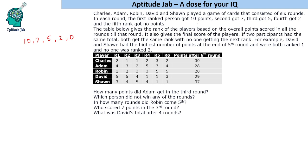For example, if we see the third round, after that round Charles was first, Adam was second, Robin was third, David was fourth, and Sean was fifth. After the fourth round, David became first, Charles became second, and so on.